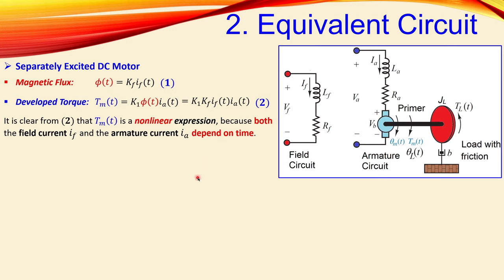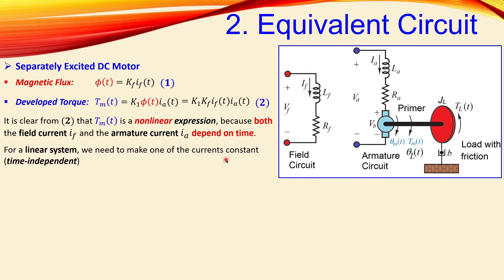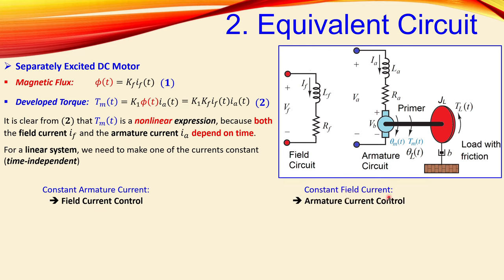Nonlinear functions can be quite complicated. For a linear system, we need to make one of the currents constant — time-independent. We can keep the field current constant and control the operation using armature current changes, or we can keep the armature current constant and control using field current. In the field current control case, i_a is held constant as a DC current with no time dependency, giving the simplified torque expression.